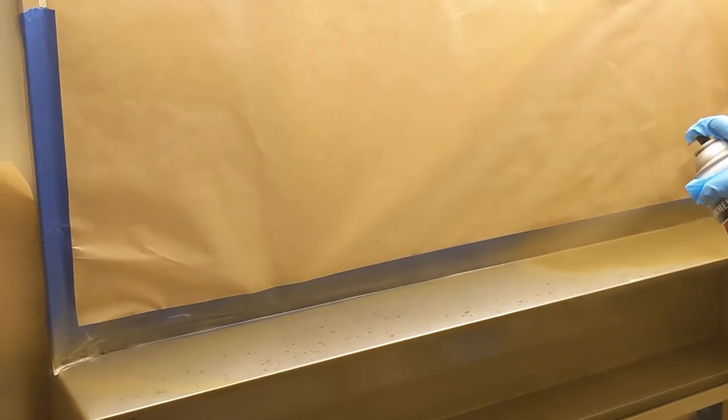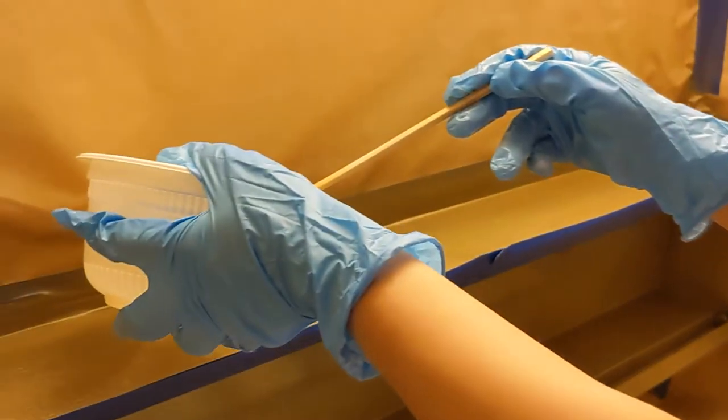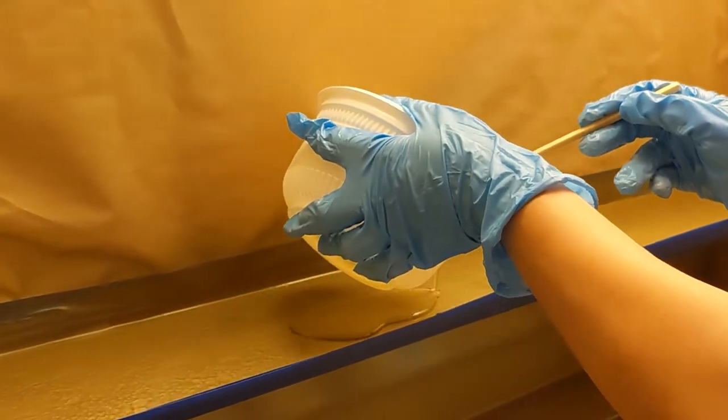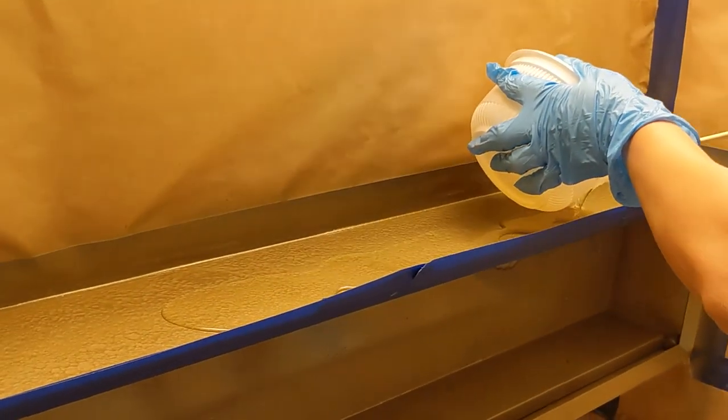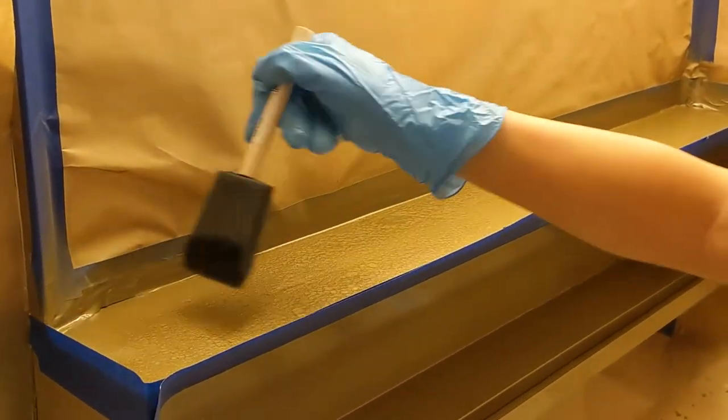We're gonna coat all the flat surfaces, the horizontal surfaces with epoxy. This is what it looks like after it dries. She mixed up some epoxy and is laying on a base of clear, spreading it out.